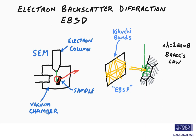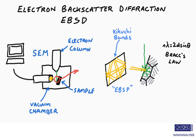If we go back to the SEM, we can insert a detector from the side of the chamber to image these electrons. The electrons are typically imaged using a scintillator, such as a phosphor screen, and that image is taken to a computer to be processed.